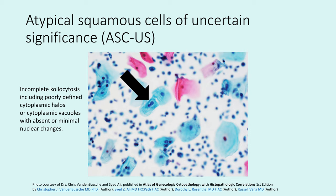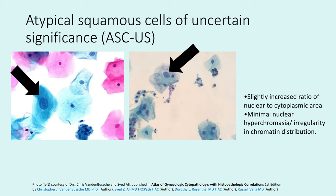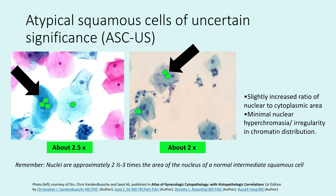This is an example of an ASCUS diagnosis noted at the arrow, where we see incomplete koilocytosis in a binucleated cell, but the cytoplasmic halo is poorly formed and there is not really good nuclear enlargement in that cell. Two other examples show a slightly increased ratio of nuclear to cytoplasmic area and minimal nuclear hyperchromasia, but no real irregularity in the nuclear outline or chromatin distribution. To gauge nuclear size, about two to two and a half intermediate cell nuclei fit into the nucleus on the right-hand side, and about two and a half to three on the left — always compare to the intermediate cell as your ruler.